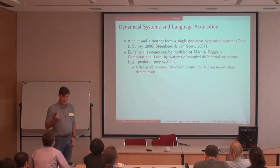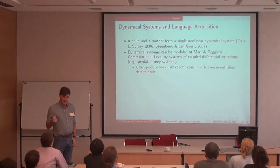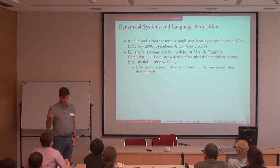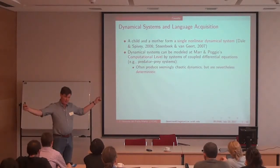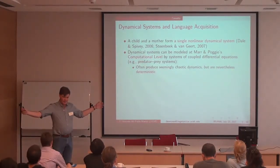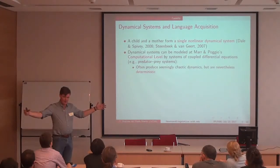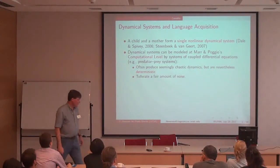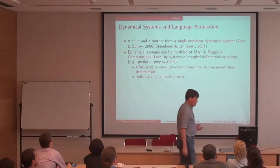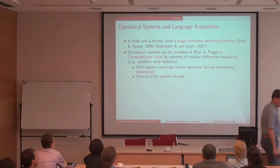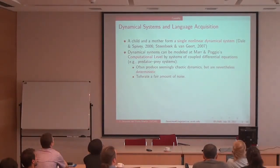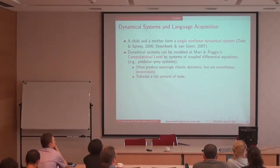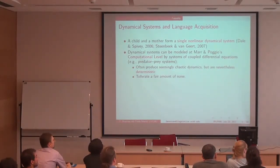By saying these are deterministic to a certain degree, we are saying this is a natural process that, irrespective of differences between one child and another, is fundamentally one single system. The techniques also tolerate a fair amount of noise, which is very important because all the data I'm going to use are observational data, which are full of noise. Even if there is a lot of noise, you can find a lot of structure here.